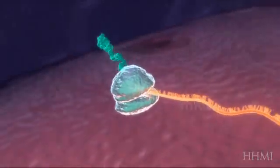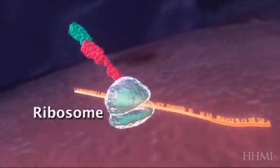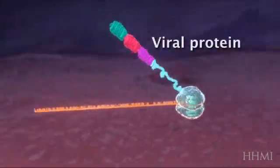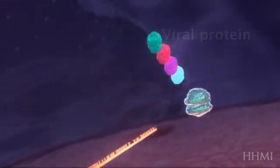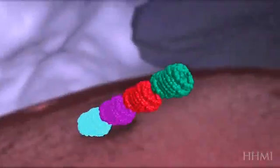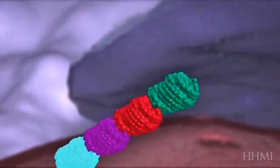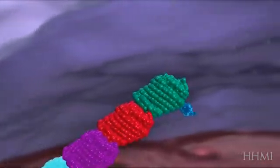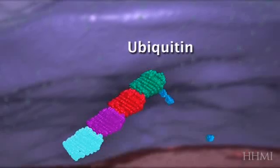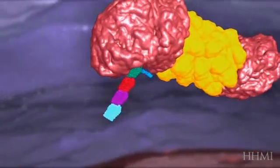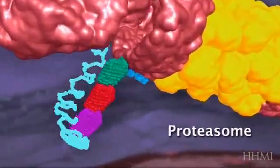You remember messenger RNA and new viral proteins being made essentially to assemble new virions, but something else can happen to those viral proteins. There are host proteins called ubiquitin that can tag these proteins. Once ubiquitin has tagged one of those proteins, it's carried to the proteasome.